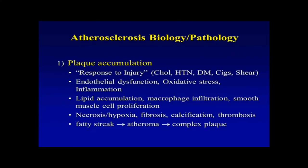Switching over to the biology and pathology — this is a plaque accumulation. The dominant theory is that risk factors like cholesterol, high blood pressure, and diabetes contribute to an injury milieu within the blood vessel wall. The initial insult leads to endothelial dysfunction, high oxidative stress, and inflammation. You get lipid accumulation, macrophage infiltration, and smooth muscle cell proliferation. In more advanced plaques, you get areas of necrosis, hypoxia, more fibrosis, calcification, and thrombosis. The pathology can progress from a simple fatty streak to a quite complex plaque with all of these advanced features.